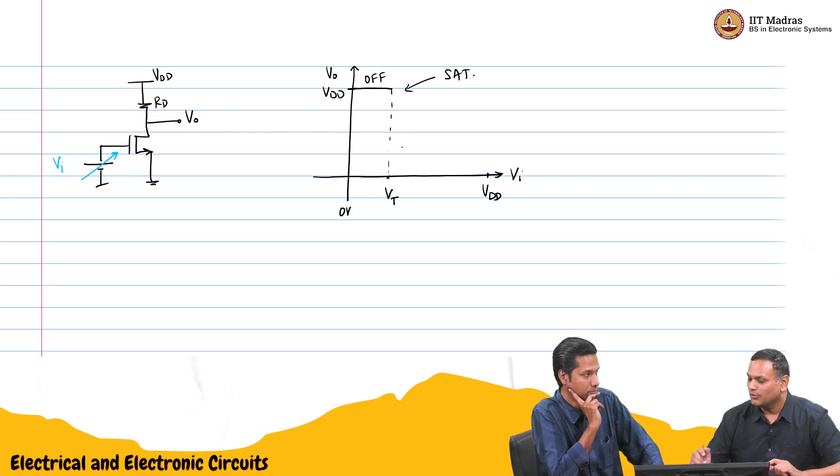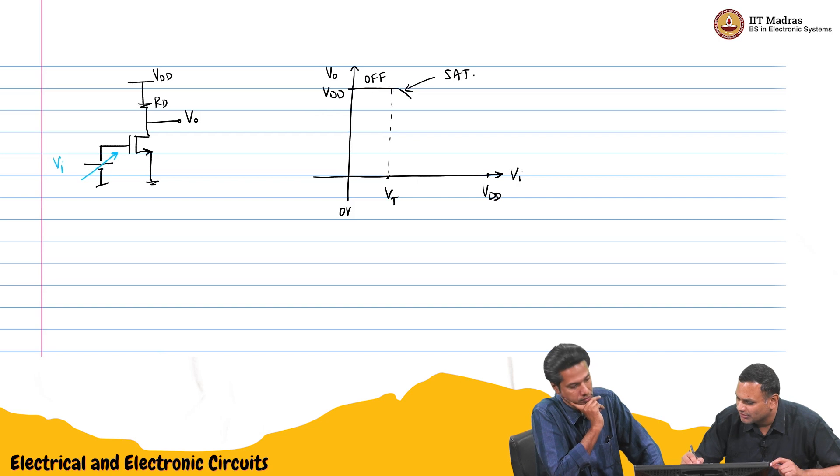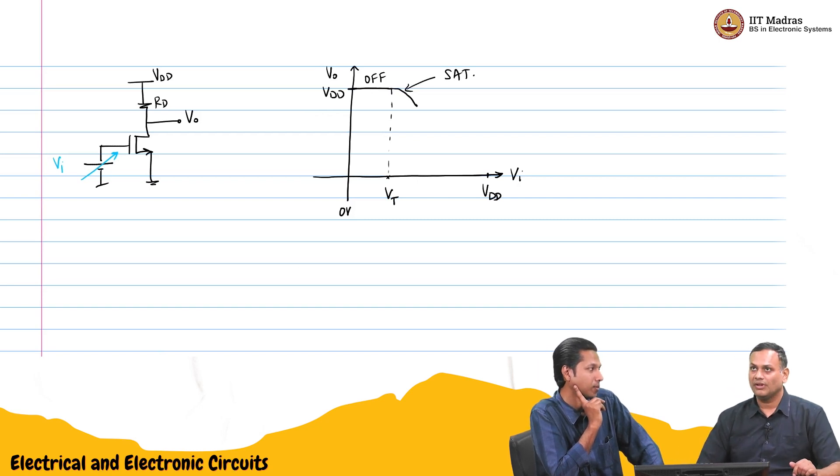And now in this region, current starts flowing. And output is Vdd minus IdRd. Most likely it has to come down. It has to come down. At some point it will enter into triode. Yes. It will enter into triode.